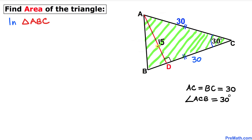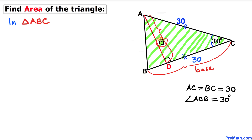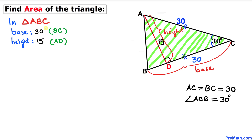Now let's focus on triangle ABC. Side length BC is 30 units and this is the base of triangle ABC, and line segment AD which is 15 units is going to be our height. So our base is 30 and our height is 15.